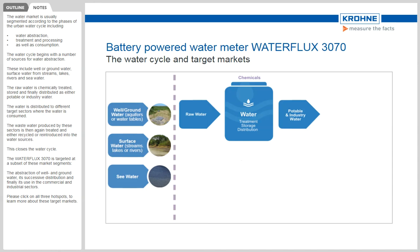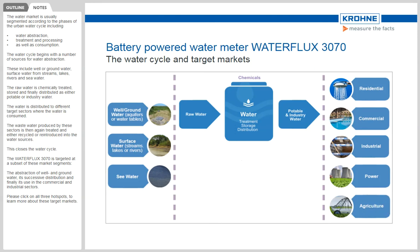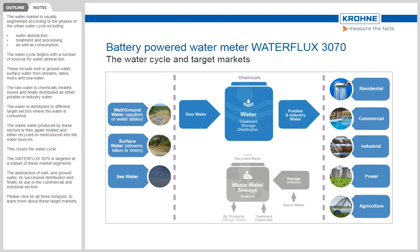The water is distributed to different target sectors where the water is consumed. The wastewater produced by these sectors is then again treated and either recycled or reintroduced into the water sources.